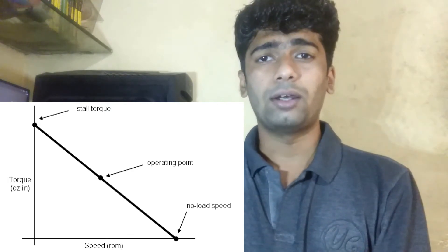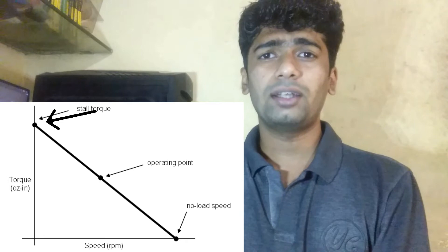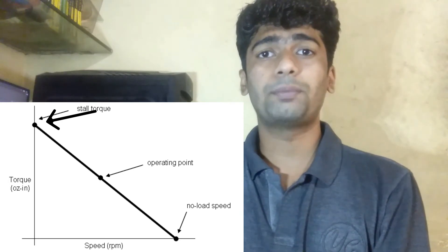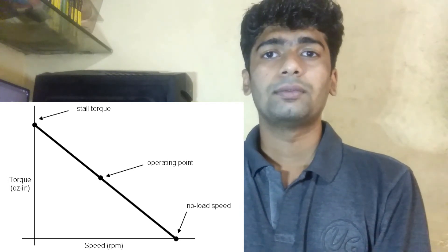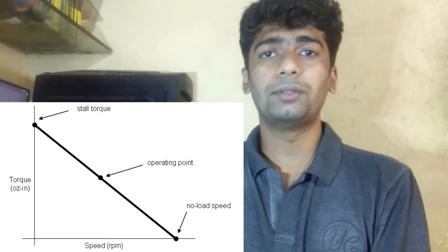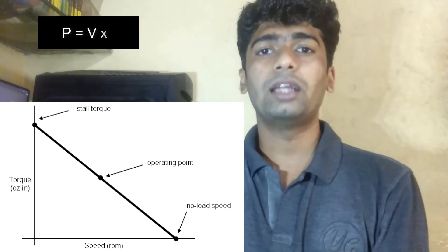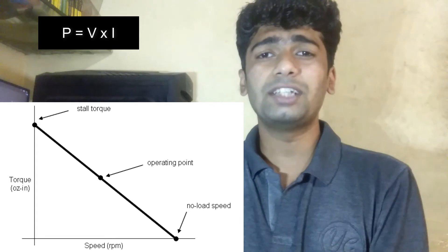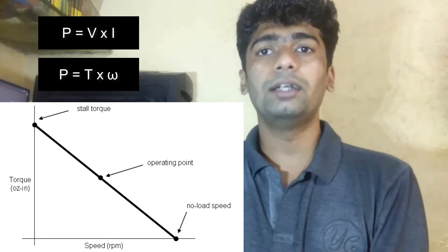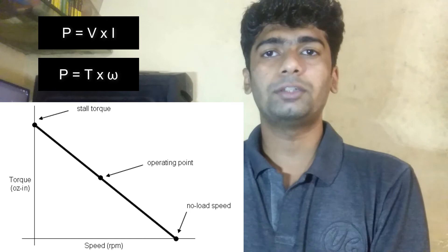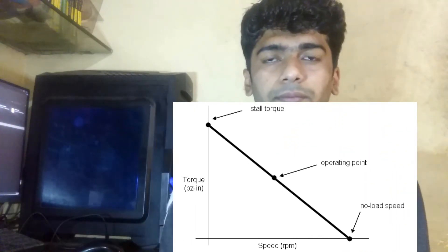Coming to the Stall Torque — it is the motor's maximum torque at zero speed. Stall Torque is the maximum torque produced by the motor, and we should operate at Stall Torque only occasionally, as it heats the motor. Because we put in electrical energy — voltage into current — and the output mechanical energy should be torque into velocity, but here the motor has zero speed and high torque, so the output power is zero.